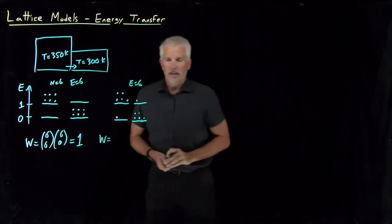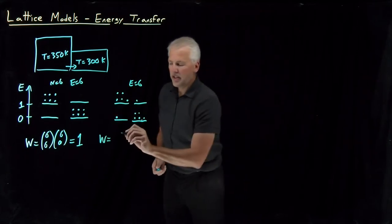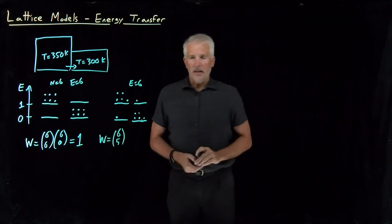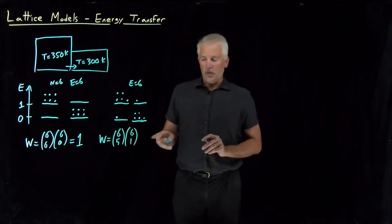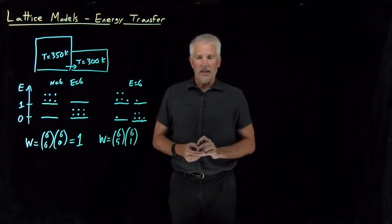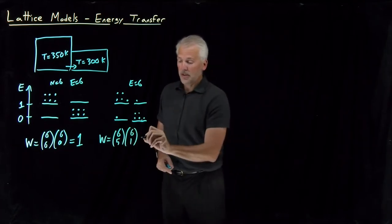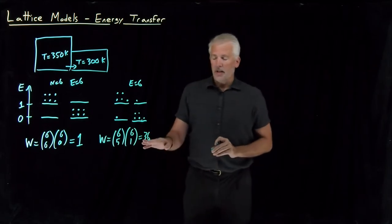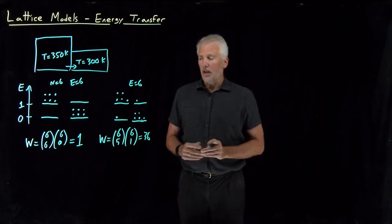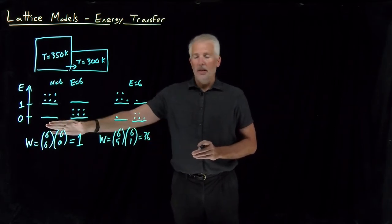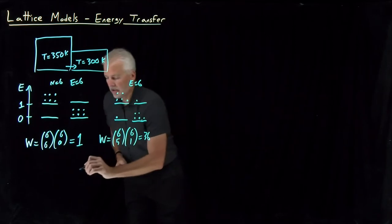The multiplicity for that macrostate: among the six molecules on the left, I need to choose which five are in the excited state, and on the right, which one of six is in the excited state. Six choose five is six, and six choose one is also six, giving a multiplicity of 36. Not surprisingly, this macrostate is more probable than the initial one — but it's not the most probable macrostate.